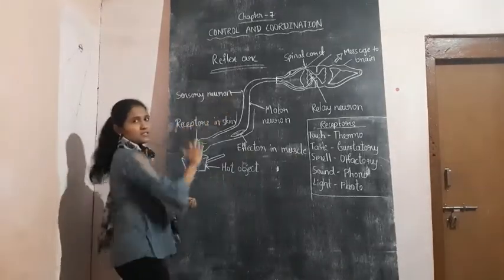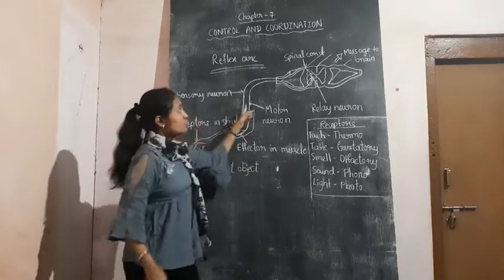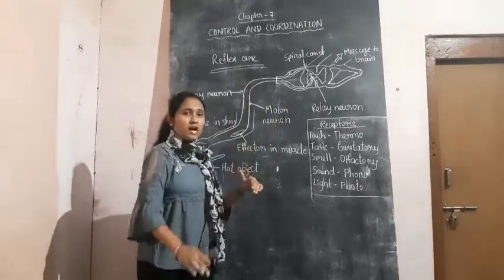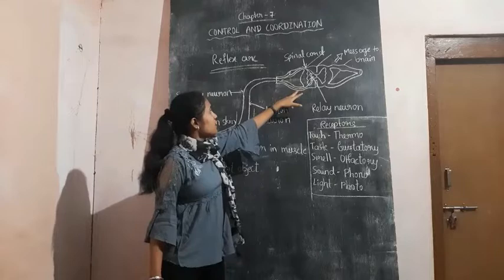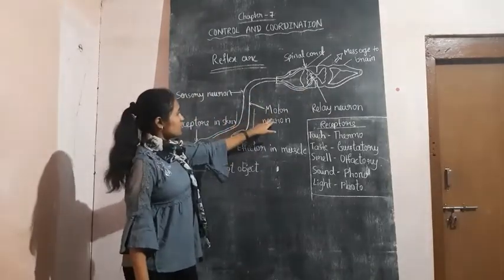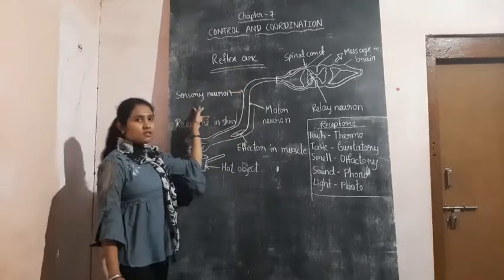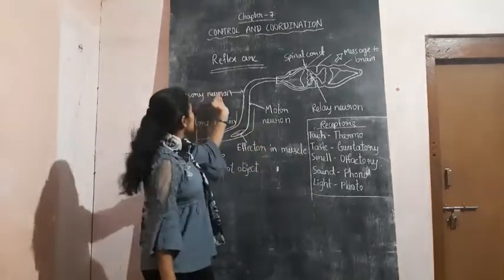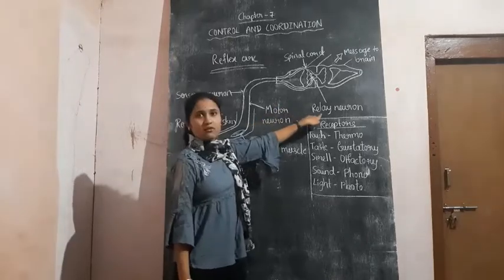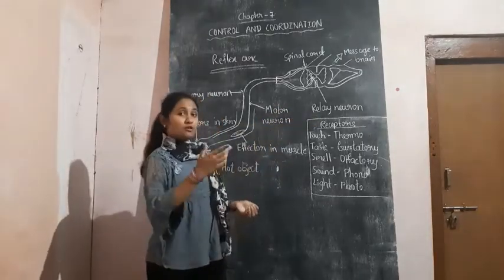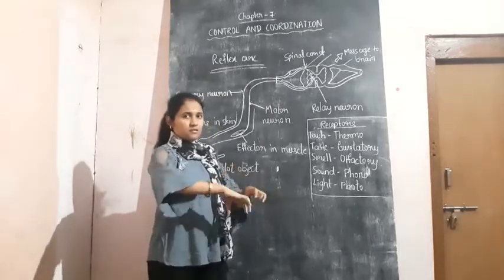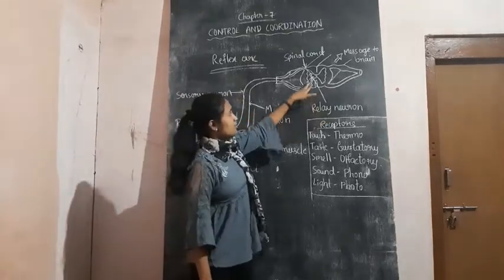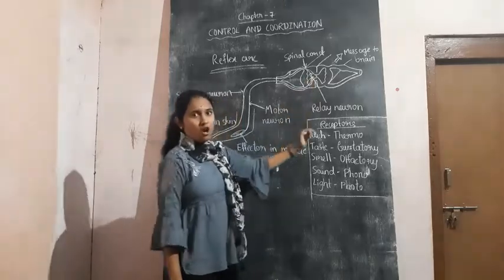Through the sensory neuron, the information is transported to the spinal cord. Later, the decision that you need to move your hand comes from the spinal cord to the effector through the motor neuron. So it goes to the spinal cord through the sensory neuron and comes back to the hand through the motor neuron. The neuron creating a bridge between the sensory and motor neuron is known as the relay neuron. The name itself suggests what you do in a relay race — it makes a bridge between two players — and that relay neuron is present in the spinal cord.